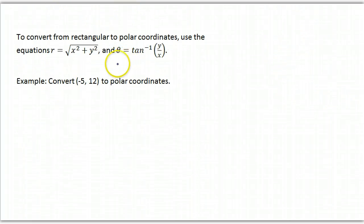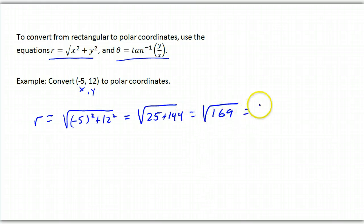To convert from rectangular to polar, you're going to use these two equations: r is the square root of x² + y², and θ is the inverse tangent of y/x. So if I have this x coordinate and this y coordinate, then r is going to be the square root of (-5)² + 12², which is the square root of 25 + 144, which is the square root of 169, which is 13.